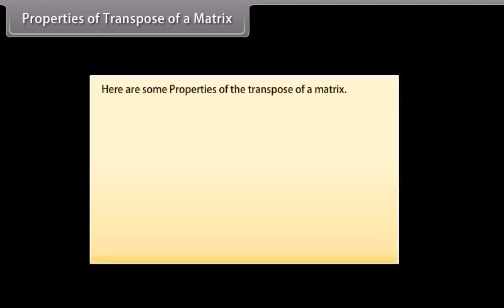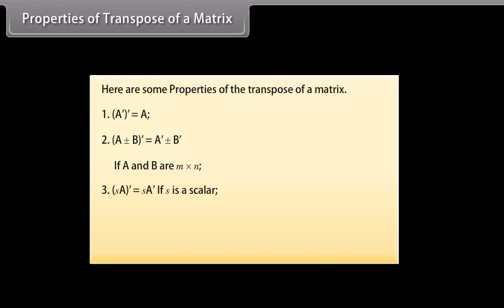Here are some properties of the transpose of a matrix. First, transpose of transpose of matrix A is equal to matrix A. Second, transpose of (A ± B) is equal to transpose of A ± transpose of B, if A and B are M×N. Third, transpose of (S·A) is equal to S into transpose of A, if S is a scalar. Fourth, transpose of (AB) is equal to transpose of B into transpose of A, if A is M×N and B is N×P.